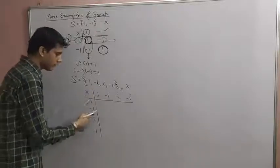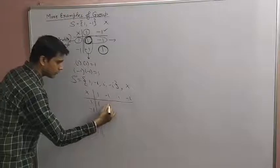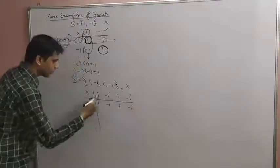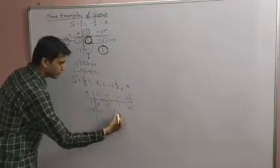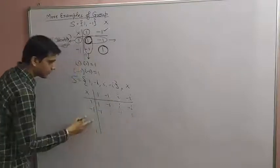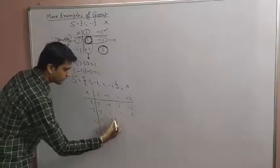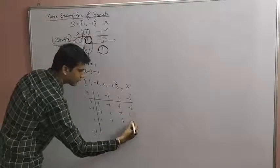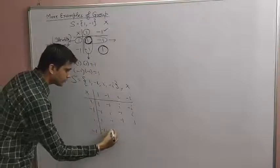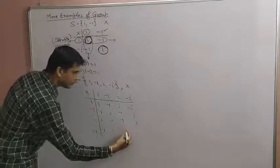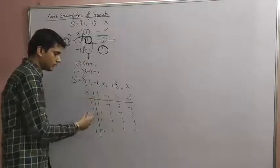The composition table has elements 1, -1, i, -i in both rows and columns. Computing the products: 1×1=1, 1×(-1)=-1, 1×i=i, 1×(-i)=-i; then (-1)×1=-1, (-1)×(-1)=1, (-1)×i=-i, (-1)×(-i)=i; then i×i=i²=-1, i×(-i)=-i²=1; and so on.